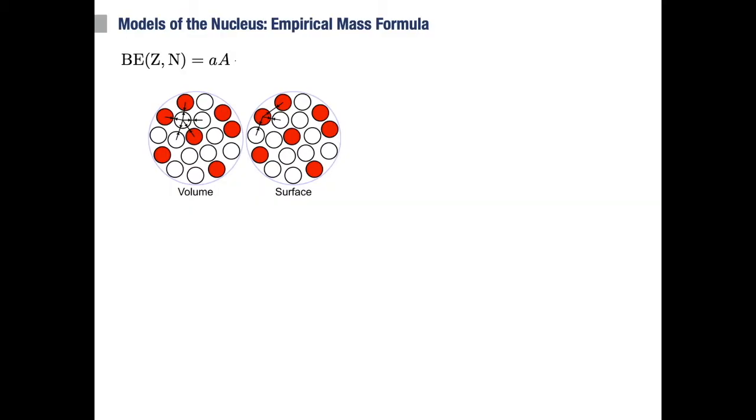If we examine this assumption closely, we'll discover that nucleons that are near the surface do not have as many neighbors to interact with as particles in the center of the nucleus. This means that our formula so far over-predicts the binding energy.